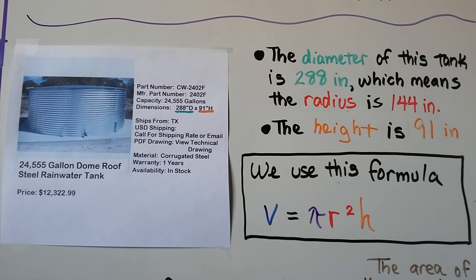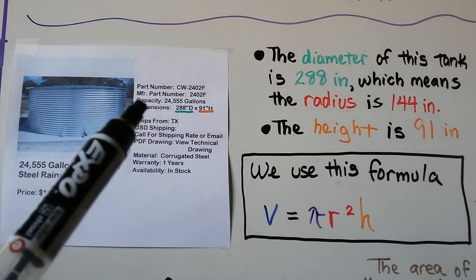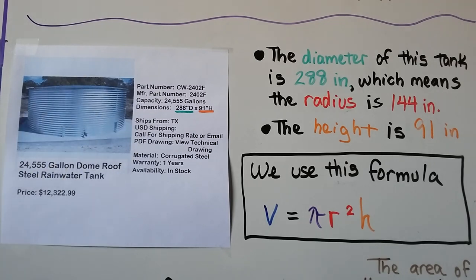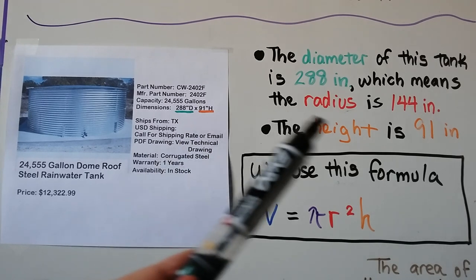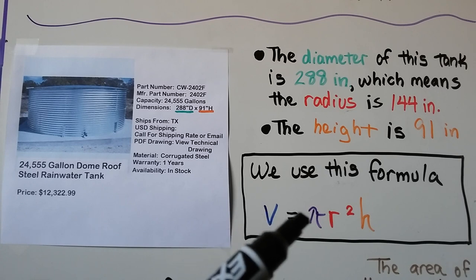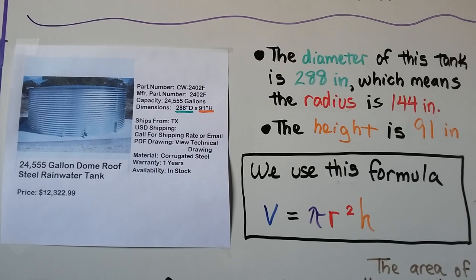In some areas of the world and even here in the United States, like the Big Island of Hawaii, cities don't supply water to homes, so they collect rainwater in tanks. Here's an ad for a steel rainwater tank. The dimensions given are a diameter of 288 inches and a height of 91 inches. The radius is half the diameter, so the radius is 144 inches. We can use the formula: volume equals pi times the radius squared times the height. I'll have a link in the description about a home that uses this method.